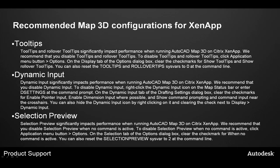Recommended Map 3D configurations for ZenApp include disabling tooltips and rollover tooltips, as they significantly impact performance. You may wish to experiment with these settings and enable only those necessary and useful for the commands in this environment. Dynamic input should also be disabled. Many Map 3D functions are older than the dynamic input functionality, so you are only seeing the command returning its options and parameters to the command line anyway — choose Control+9 to enable the command line and disable dynamic input. Finally, Selection Preview also has a significant impact on performance. You will want to disable it, or at a minimum, if you have sufficient system resources, have it enabled only when no command is active.